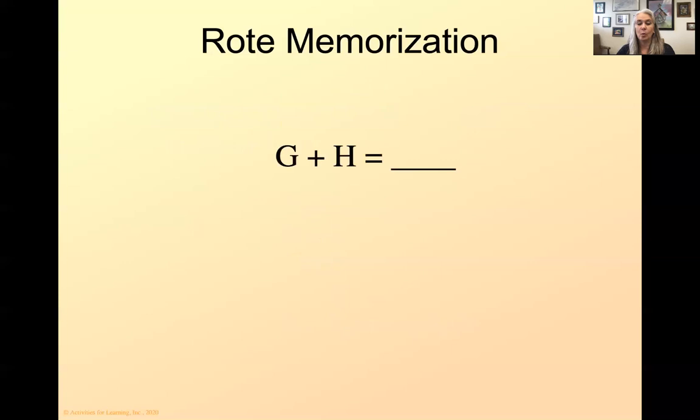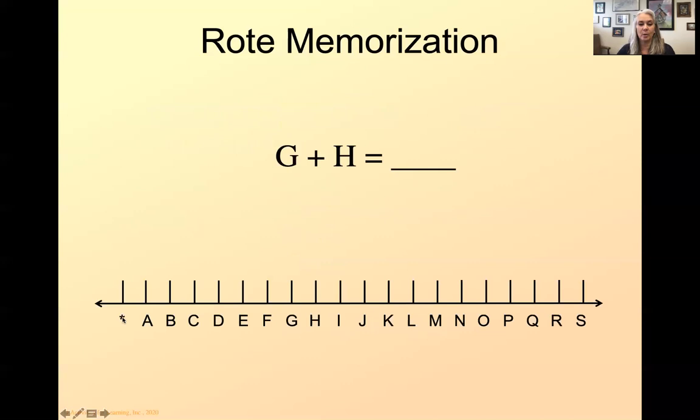What's G plus H? Now some of you have checked out already because you don't know the answer. Well, let me help you out here. Let's get a number line. So we're getting a number line here. If you can see my arrow, here's the first one, A, because actually this would be zero. It makes no sense to kids, the young ones. So they understand what one is, but they don't understand what zero is. So we're going to start. A is one, B is two, C is three. Okay. So I can use my number line.